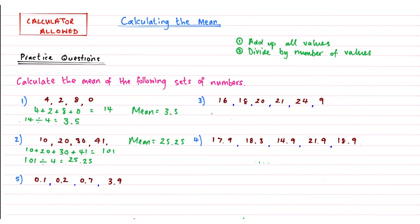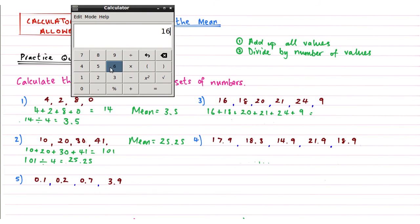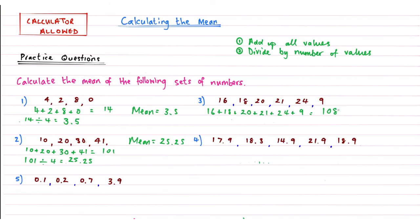And then question 3. Again, answering each question exactly the same so my method becomes automatic. If you want to get good at something, you need to practice doing it exactly the same each time so your brain gets used to repeating the same process. Because if it repeats the same process, it can remember the same process. So we're typing these in. 16 plus 18 plus 20 plus 21 plus 24 plus 9. So that gives me a grand total of 108 this time.